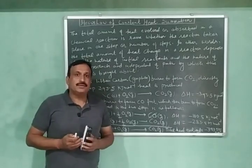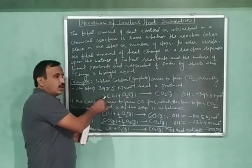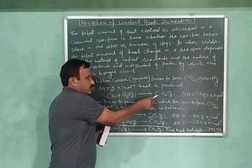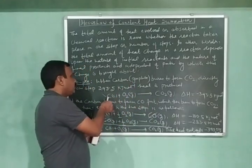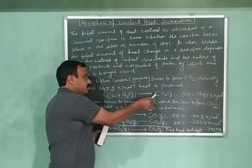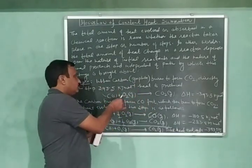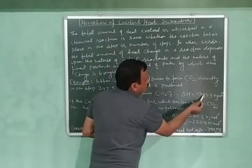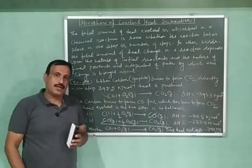So now let us explain it with an example. And in this example, one mole of carbon is converted into carbon dioxide. So carbon here is in the form of graphite. So one mole of carbon is converted into carbon dioxide in a single step by reacting with one mole of oxygen and the heat evolved during this reaction is equal to minus 393.5 kilojoule per mole. So this is a single step reaction.